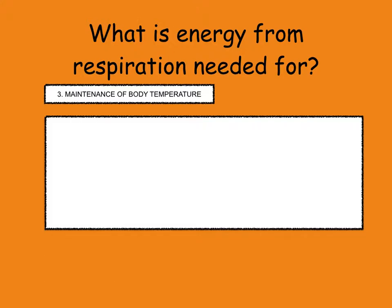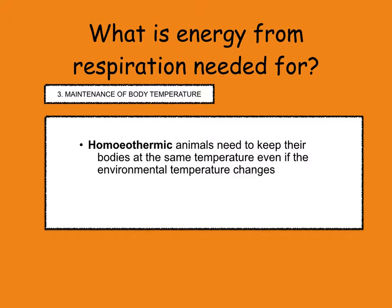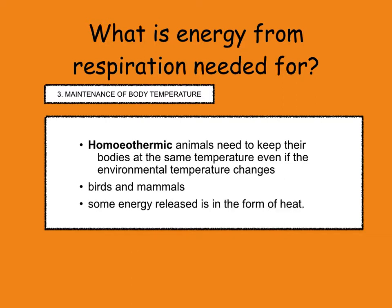The third is maintenance of body temperature. Homeothermic animals are warm-blooded animals that need to keep their bodies at the same temperature even if the environmental temperature changes. Two groups of vertebrates that do this are birds and mammals. When their body temperature drops, they need to become active to release energy in the form of heat to warm up, or fluff up their fur or feathers. If the body temperature rises, they can sweat to cool down.